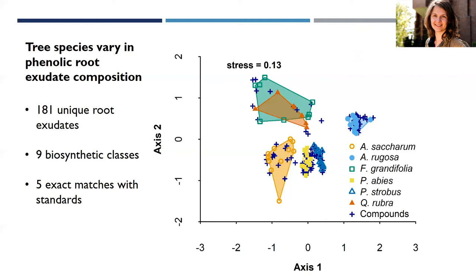I used an NMDS analysis for that. Points that are closer together are more similar and points further apart are more dissimilar. I tested six different tree species, and as you can see they cluster quite tightly together, meaning that phenolic profiles were very unique to each species — though we also see some overlap in the case of oak and beech.